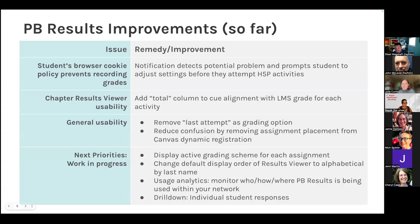Some of the improvements we have made so far — the third-party cookie fix consists of a notification sent to students letting them know there's a potential problem and allowing them to adjust their settings before they attempt any H5P activities. We've also made an adjustment to the activity viewer so you can now find the sum of points from all activities in an assignment in a new totals column on the right-hand side of the chart. We've also made general usability changes: we removed the 'last attempt' as a grading option in the chapter configuration, and we removed the assignment placement from the Canvas dynamic registration, streamlining the process to only one place for launching the content selector.